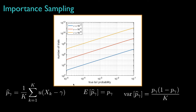Here are plots showing the number of trials required to attain an estimator standard deviation, or RMS value, as a function of the true tail probability. The blue line corresponds to the number of trials required to attain a standard deviation equal to 10 to the minus 4. The red line corresponds to a standard deviation of 10 to the minus 5, and the yellow line corresponds to 10 to the minus 6.